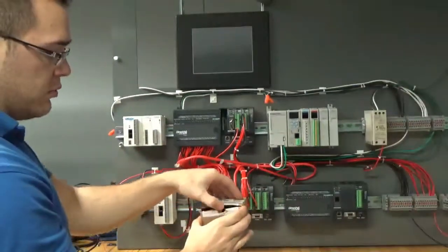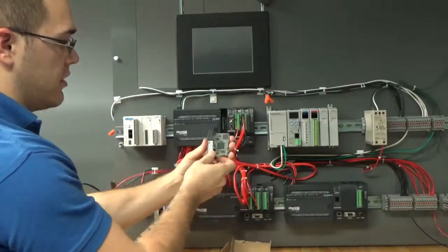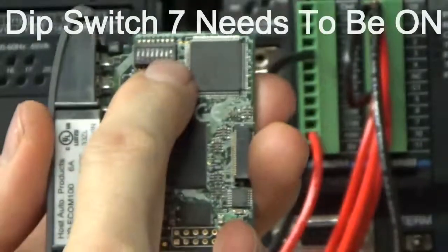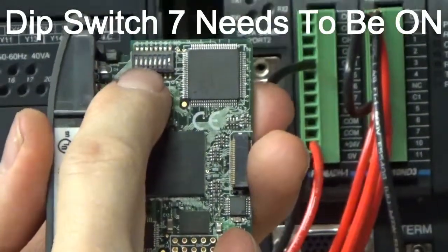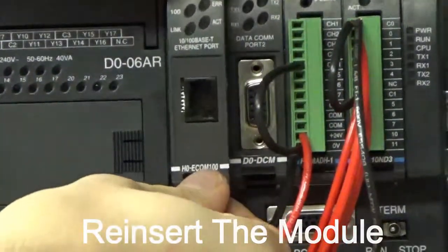Once you have a replacement, we're going to remove it from the box. Next, we're going to verify that DIP switch 7 is on and the rest of the DIP switches are off. Next, we're going to push it into the PLC nice and straight.